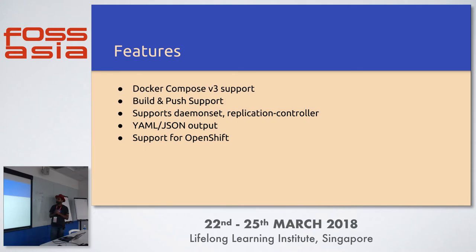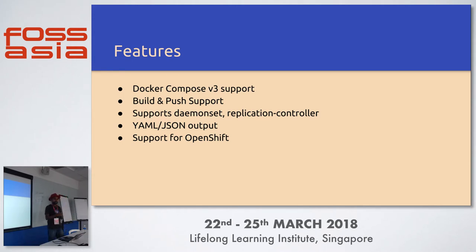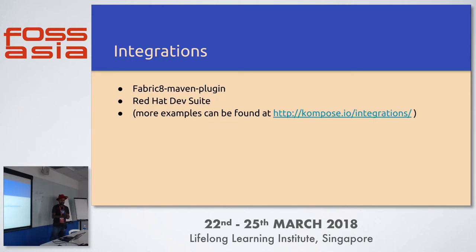So the features we have added: Docker Compose version 3 support, and we're trying to add the latest version 3.2 as well. We have build and push support — if you have a build key, I'll show that in the demo. We support other controllers as well. We have both YAML and JSON support, because most ops folks hate YAML due to indentation. We support OpenShift as well. And we have an integration with the Fabric8 Maven plugin in Red Hat Dev Suite, with other cool integrations on our website.